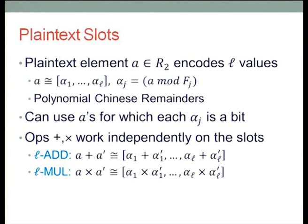Once you've done that, it behaves exactly like Chinese remaindering over the integers. When you multiply two polynomials, each part modulo each one of the factors gets multiplied pointwise. When you add them, you get pointwise addition on the slots. When you multiply them, you get pointwise multiplication of the two plaintext slots. So you get an L-add and L-multiply which just operate on arrays as opposed to on single elements.